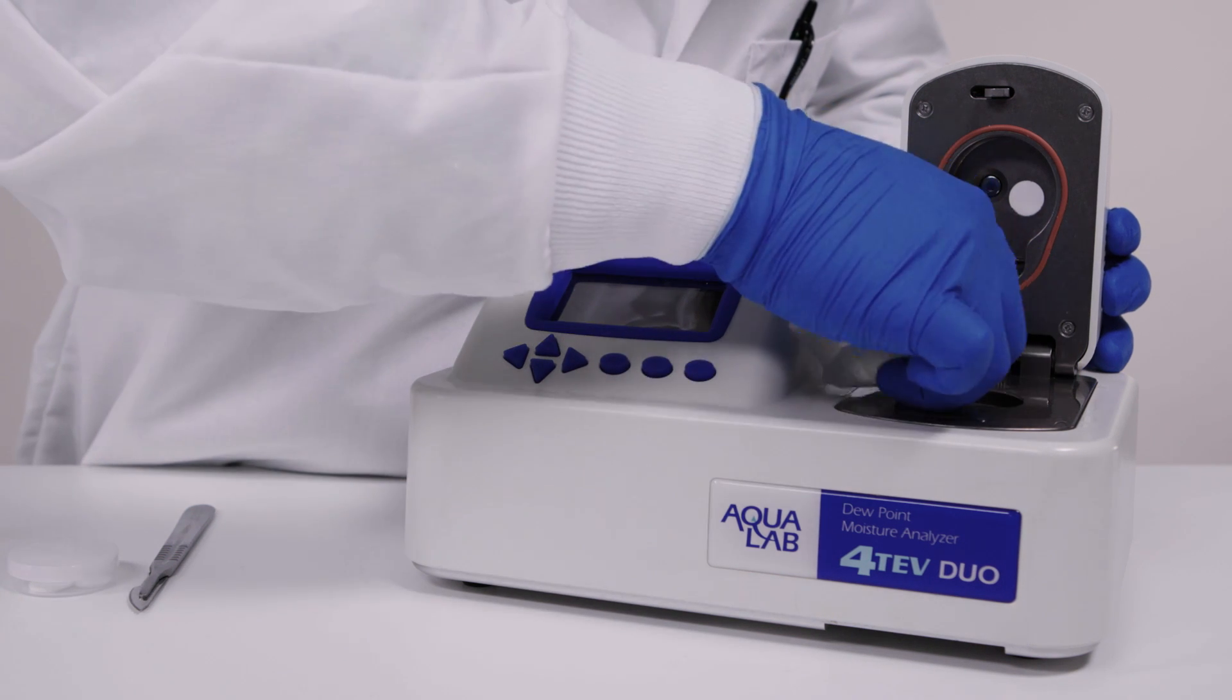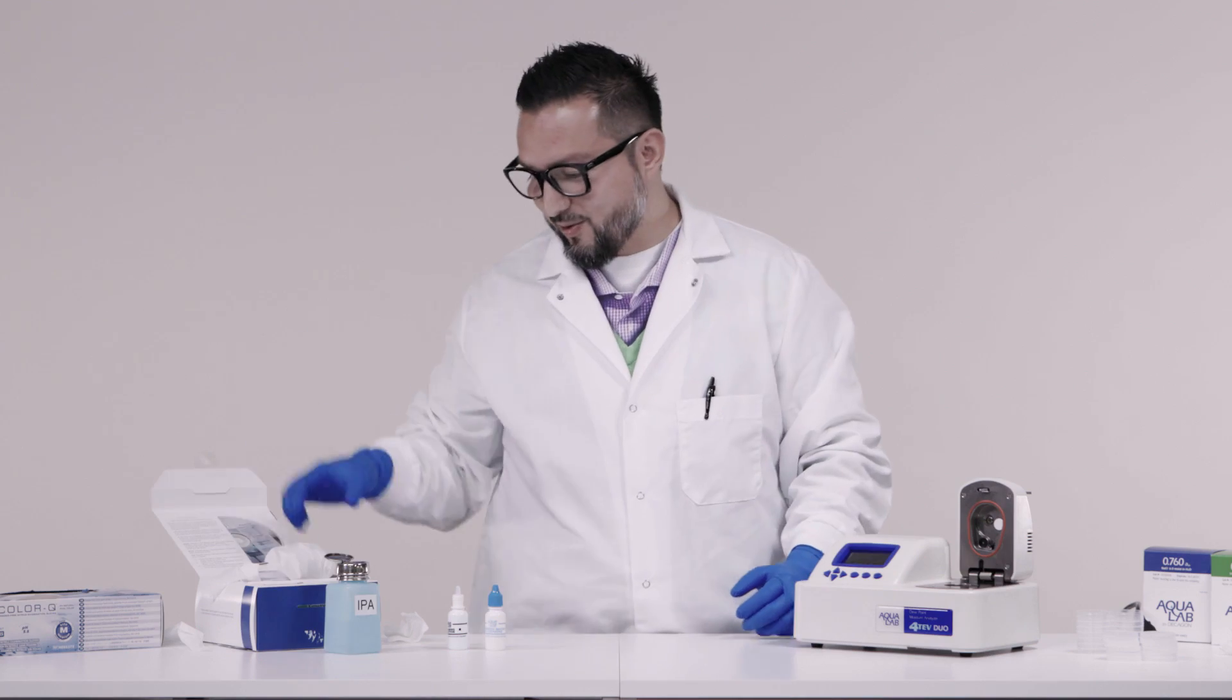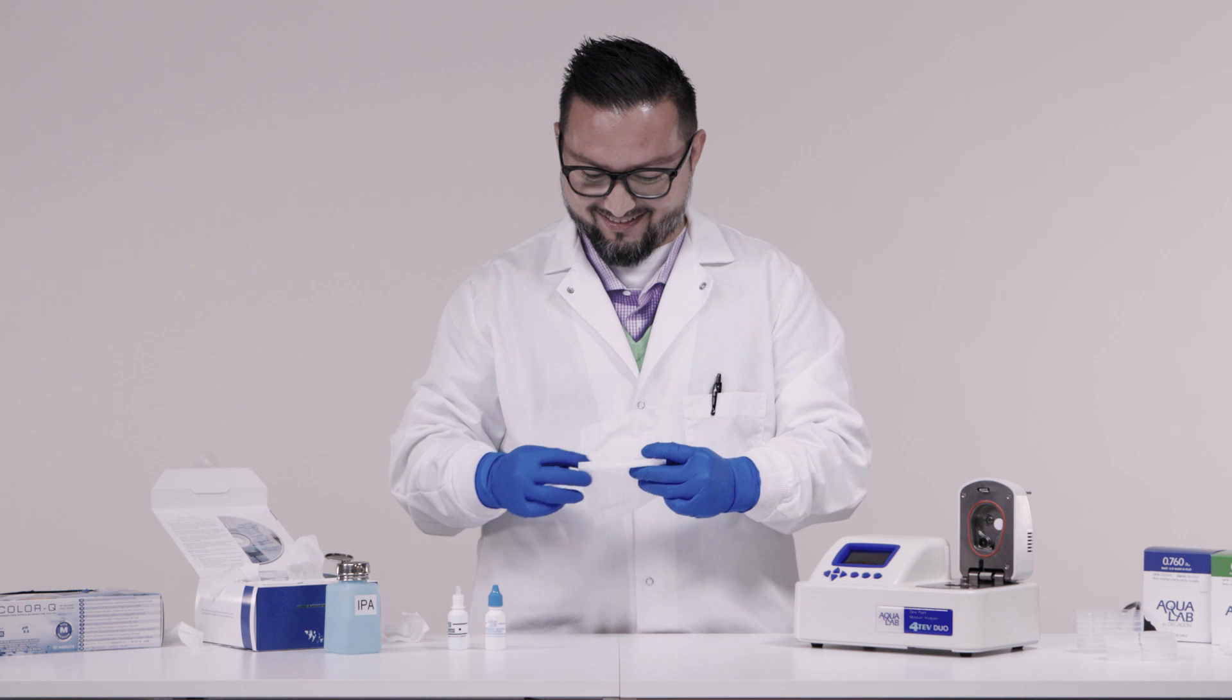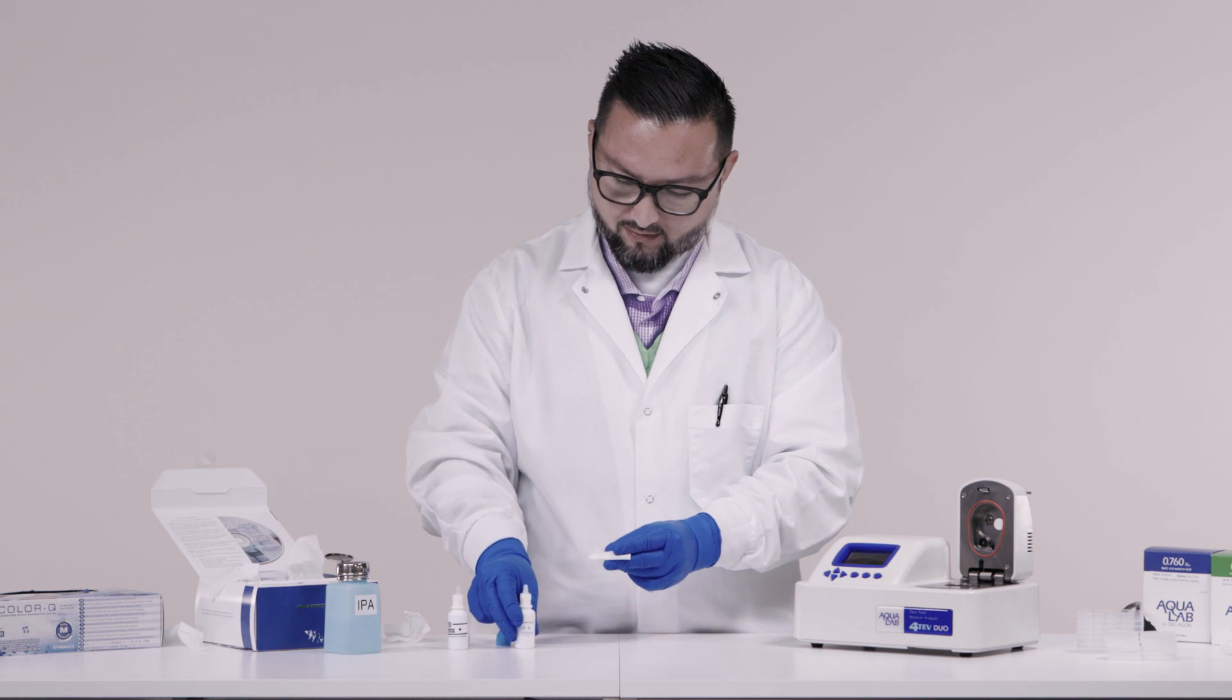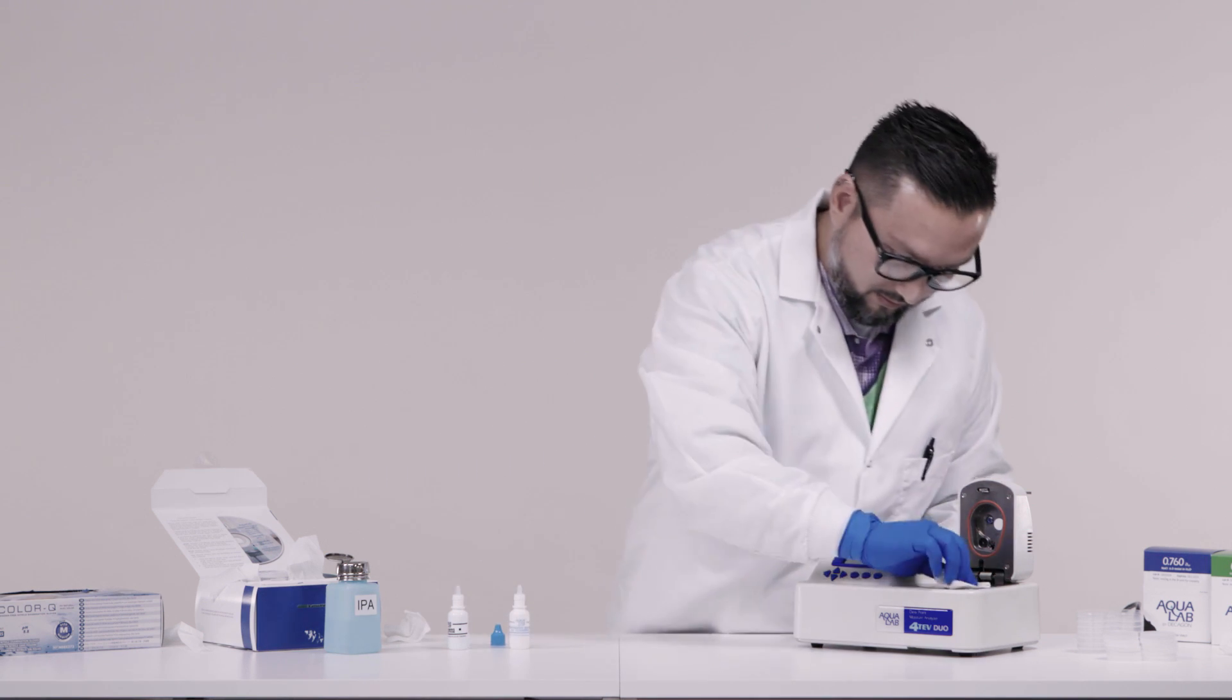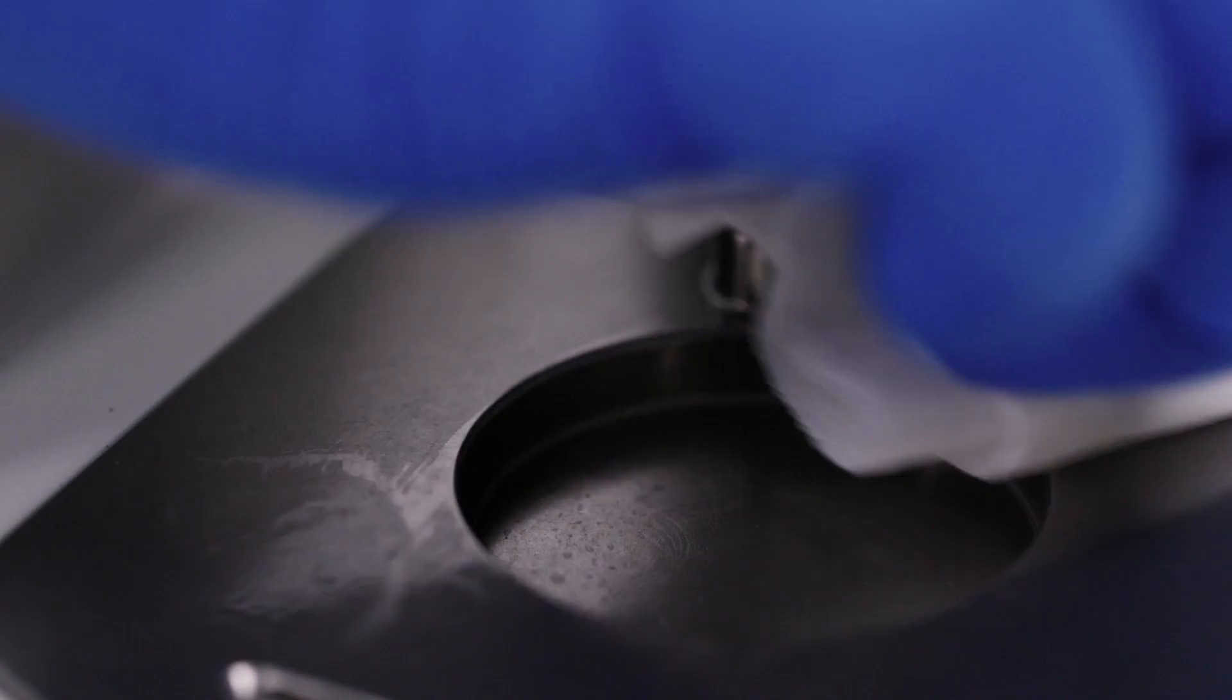Now rinse the surface area just washed. Get a new large kimwipe and moisten it with clean distilled water. Repeat the same process. Remember not to dip a dirty kimwipe into your clean distilled water. Dry the sample chamber with a new dry kimwipe.